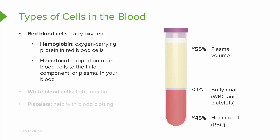The hematocrit tells us the proportion of red blood cells to the fluid component, or the plasma, in your blood. So if I have somebody who's bleeding out, their H and H will go lower. Keep that in mind — if a patient has experienced a trauma and lost a lot of blood, that H and H will be lower than normal. So we've looked at the first cells, the red blood cells, and we know their job is to carry oxygen.